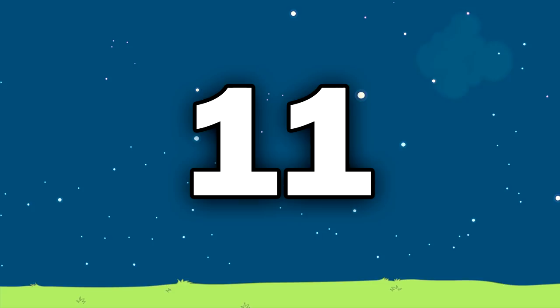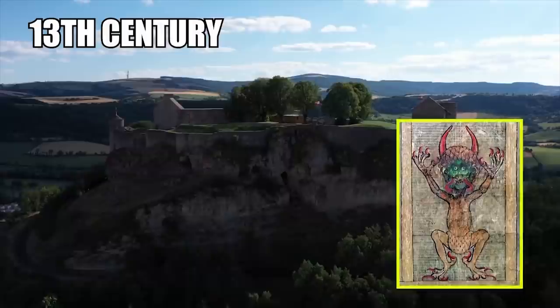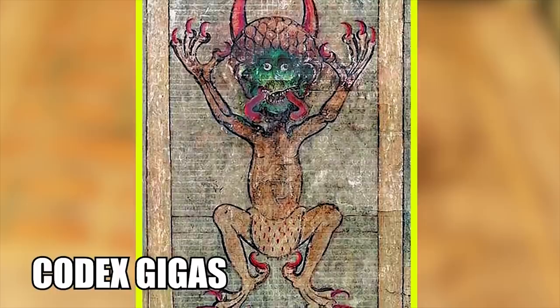Number 11, The Codex Gigas. Now, something for those of you who love books so much, you wish you could have all of them in one single book. Well, in the early 13th century, the Codex Gigas, or Giant Book in English, was created pretty much for this purpose. Essentially, a giant illustrated medieval book of the world, the Codex Gigas is basically the world's first compilation book.